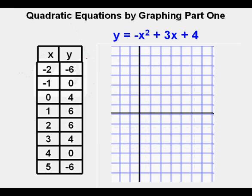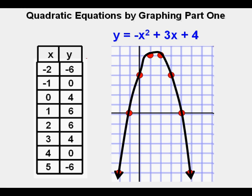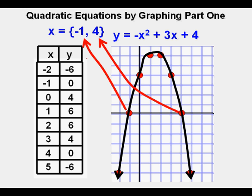Joe then uses the function to create a table. And these are the values he found in the table. Joe plots the points. He connects the dots by drawing the curve that connects them. He sees the two points where the function crosses the x-axis at x = -1 and x = 4 and writes down the solutions here.